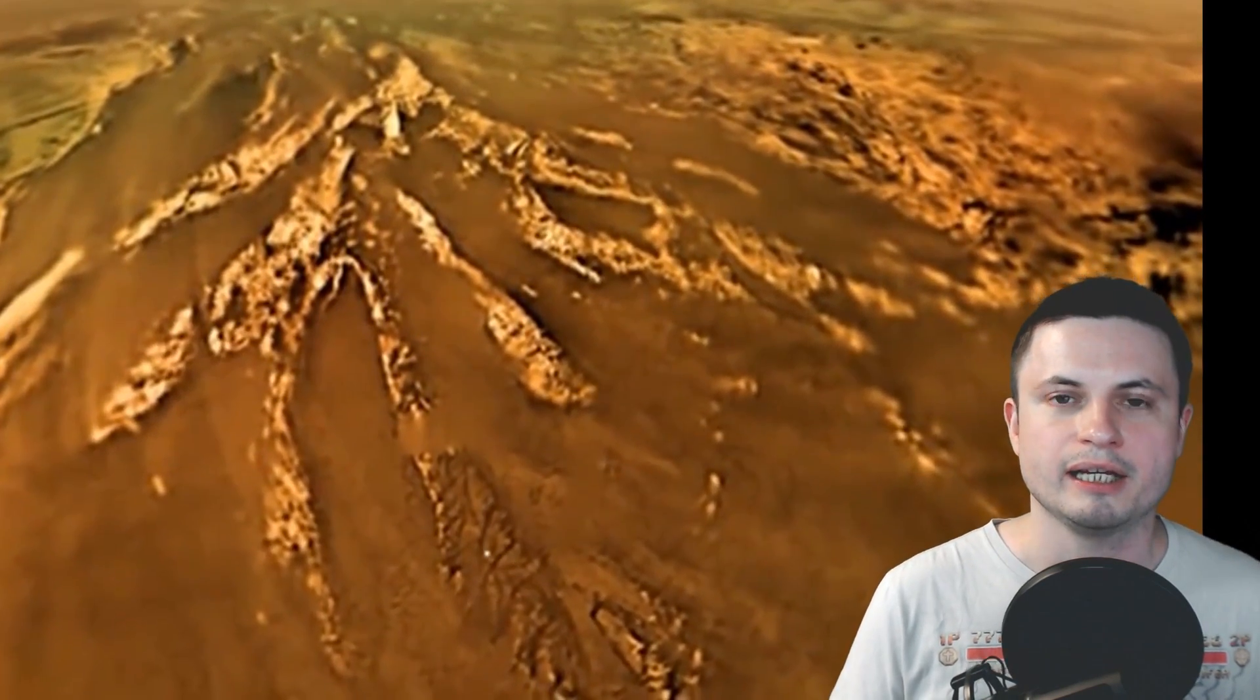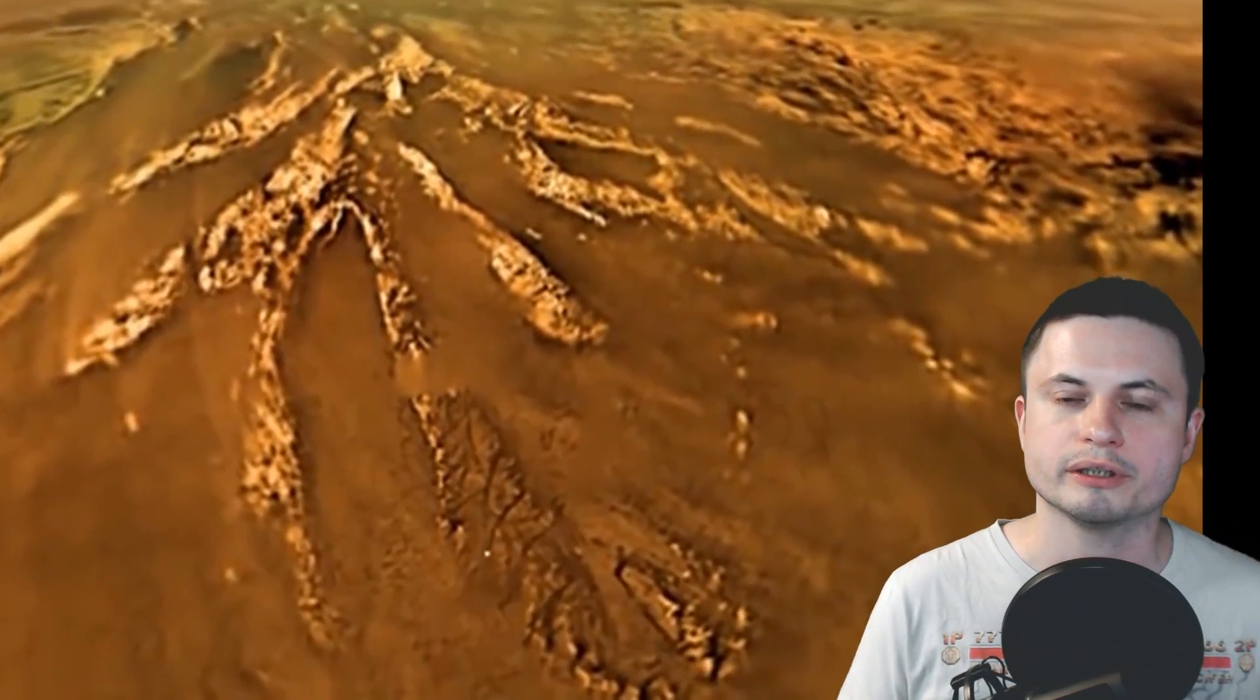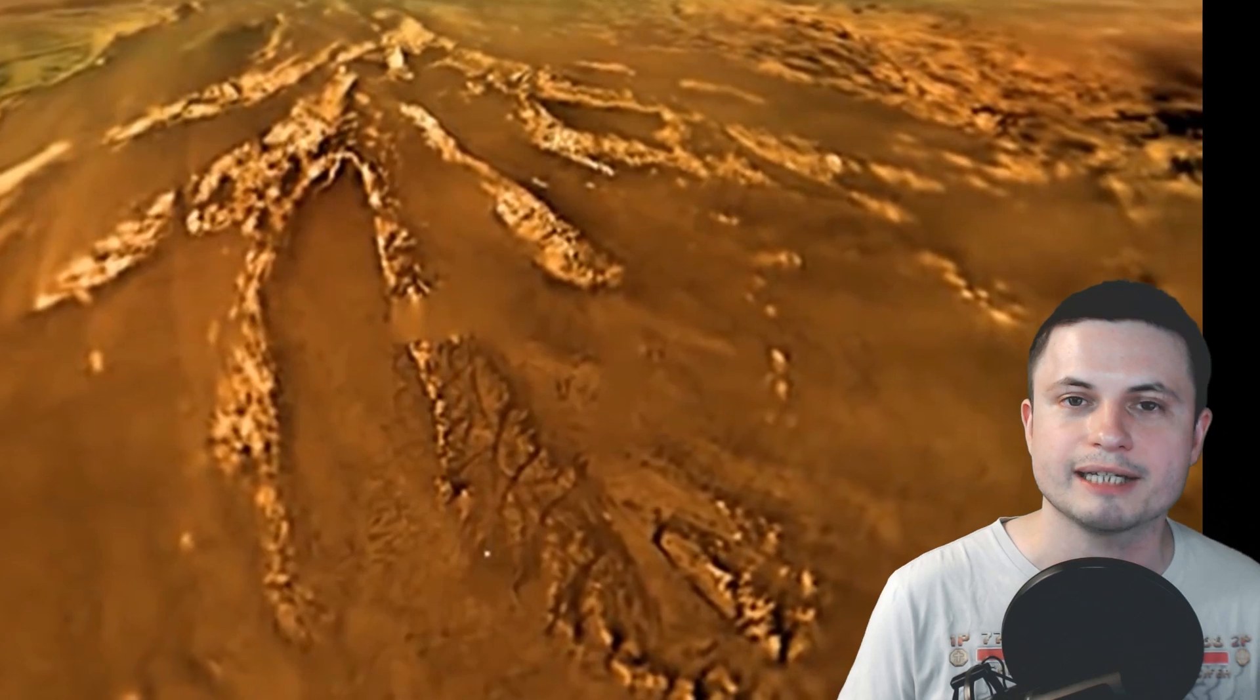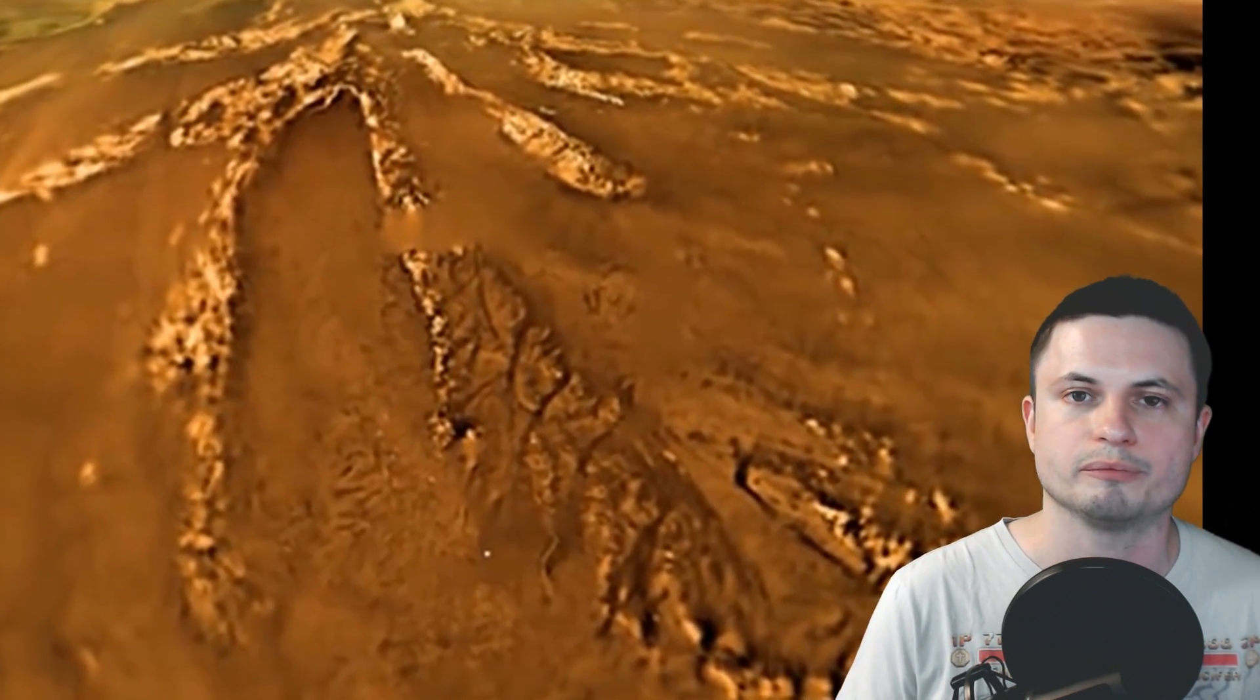So in some sense, the existence of Tholines early on, on earth may have actually saved life and protected it from various effects from sunlight.